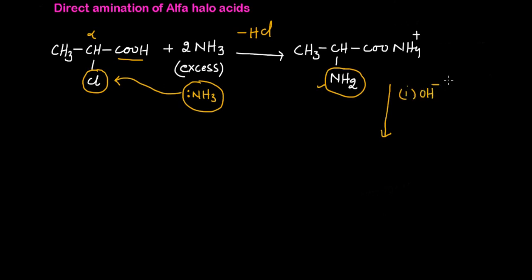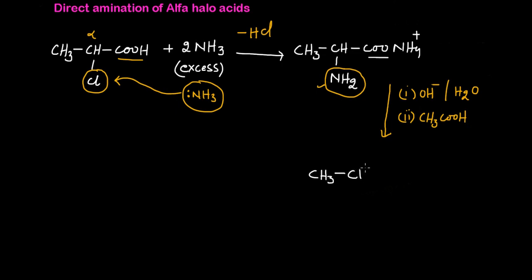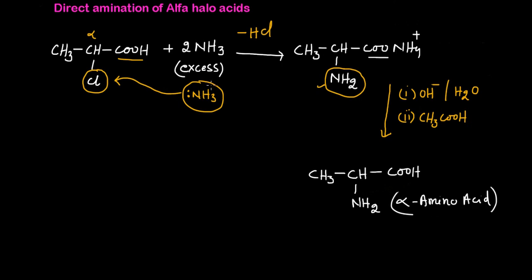Then we hydrolyze the ammonium salt. When we do the hydrolysis in the presence of a weak acid such as acetic acid, it converts into the alpha amino acid. The ammonium part is converted back to the COOH acid group, giving us CH₃CH(NH₂)COOH — that is our alpha amino acid.